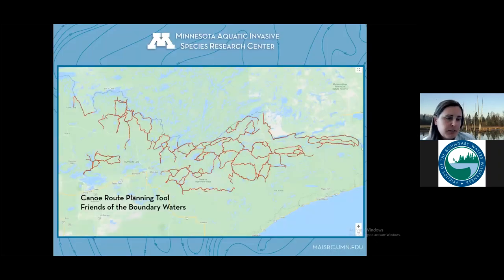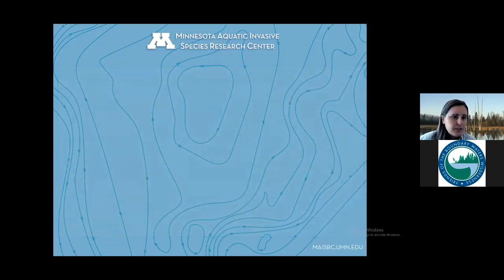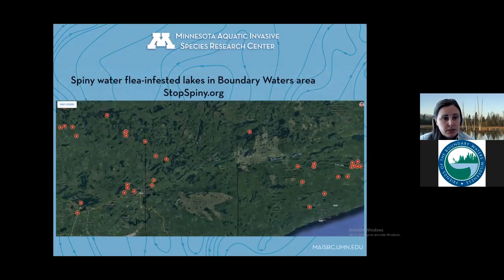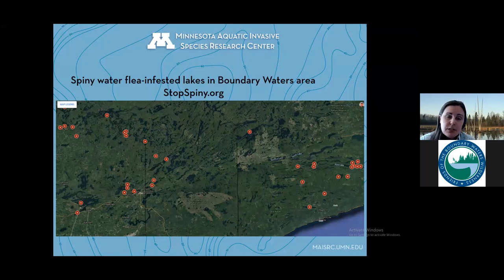This is a screenshot from a wonderful route planning tool that Friends has created and hosted on the website. Here's a look at which lakes in the Arrowhead are currently known to be infested with spiny water fleas. The take-home point is that there are numerous lakes inside the Boundary Waters with known spiny water flea populations, and several popular entry point lakes have them, including Lake Vermilion and Fall Lake.